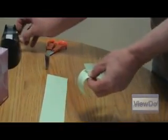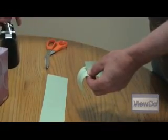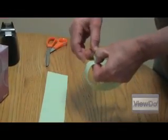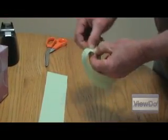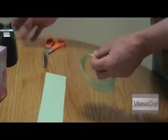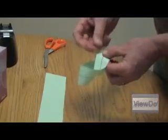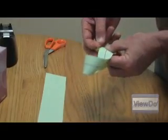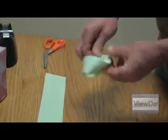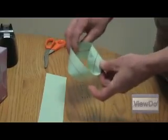I'm going to tape this together, and then we're going to explore how many dimensions this object now has. So, connect this, and we've now got our loop with a half twist in it. This is called a Möbius strip.